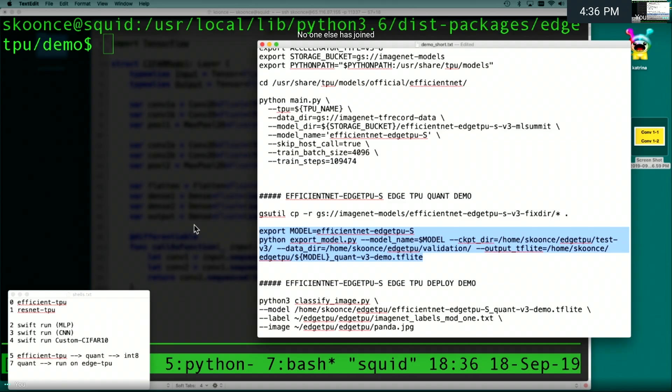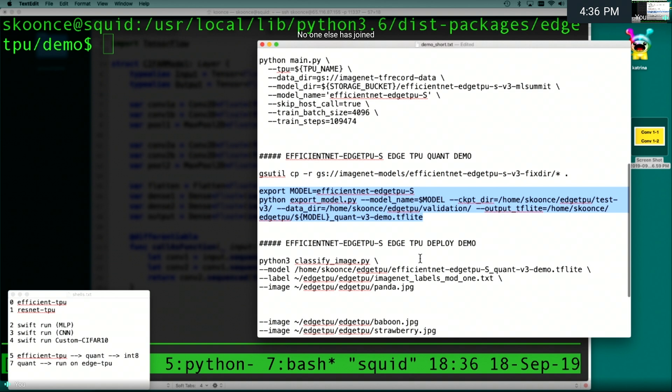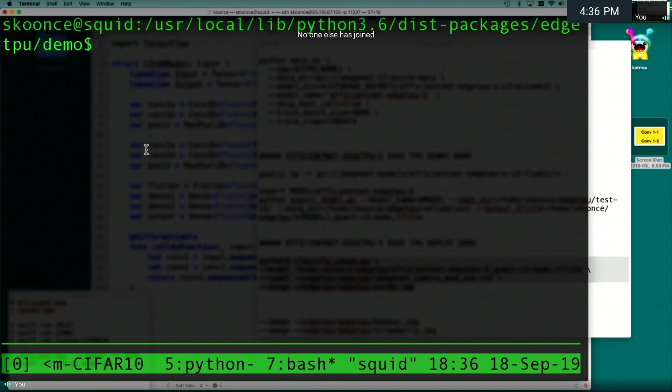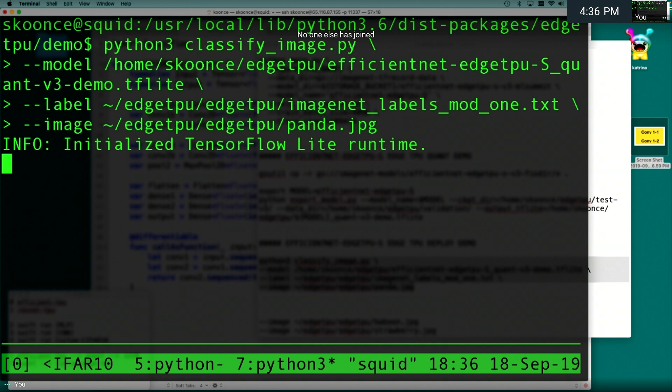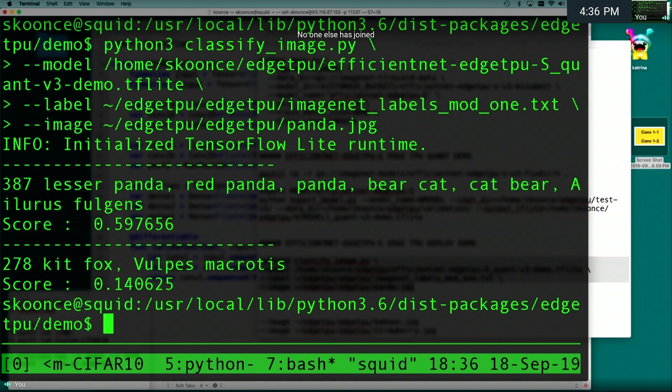And so then finally, we'll go to Wikipedia and download the Panda picture. And we'll run the completely standard ImageNet demo that they have in the Edge TPU demos. The only other modification I've made is I've provided a list of ImageNet labels to work with. Our network thinks that it's looking at a Panda picture with approximately 60% probability. But it might also be a Fox. It's not perfectly sure.